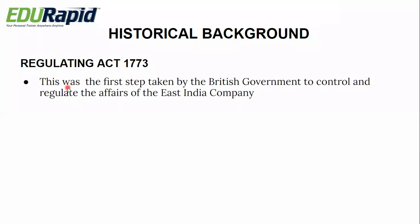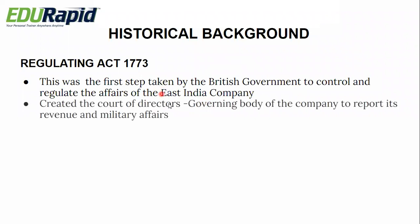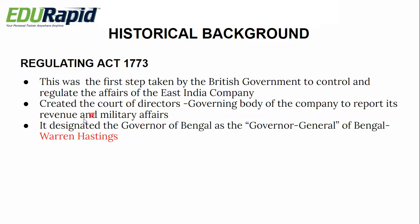The first provision of the Regulating Act 1773 was that it was the first step taken by the British government to control and regulate the affairs of the East India Company. To regulate something, they needed some kind of organization or structure. So they created the Court of Directors — the governing body of the East India Company to report its revenue and military affairs. The British government created this Court of Directors to hold the company answerable. It also designated the Governor of Bengal as the Governor General of Bengal.